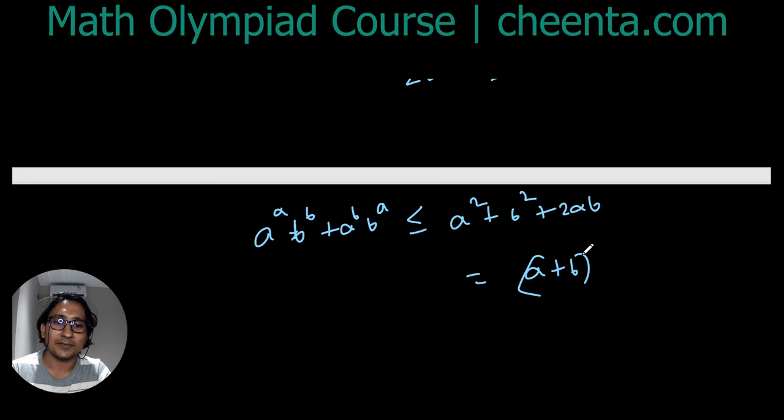Therefore a^a b^b + a^b b^a is less than or equal to a² + b² + 2ab which is just (a+b)² which is equal to 1.